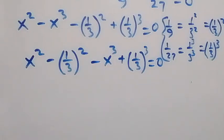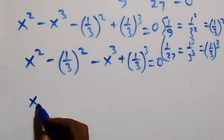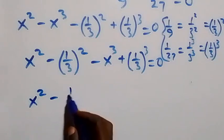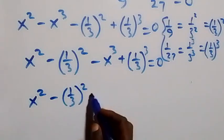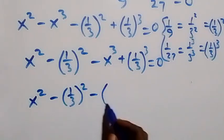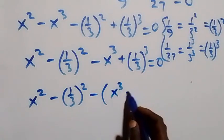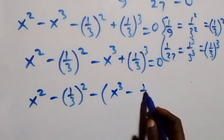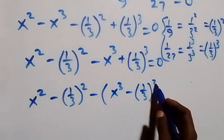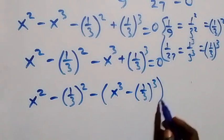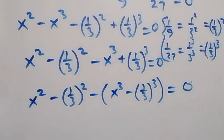This equation becomes x squared minus 1 over 3 all squared, then minus into bracket x cubed minus 1 over 3 cubed, close bracket, equals to zero.